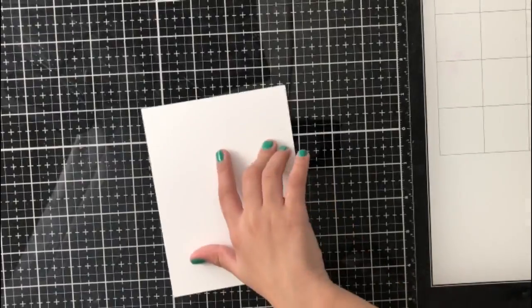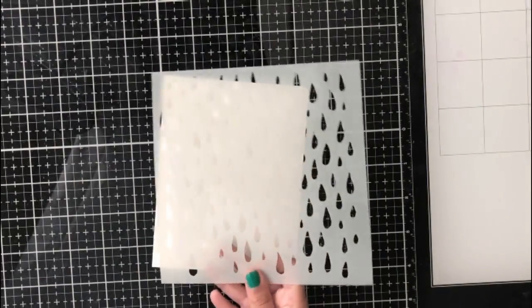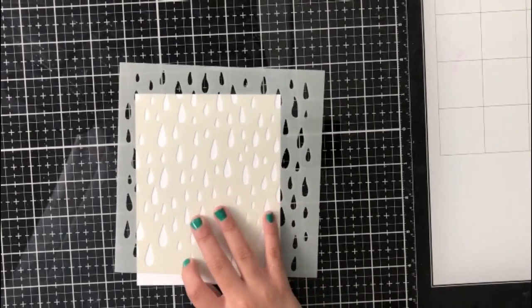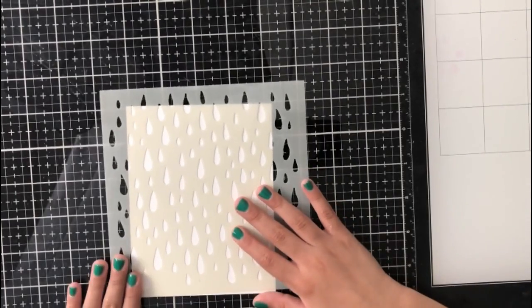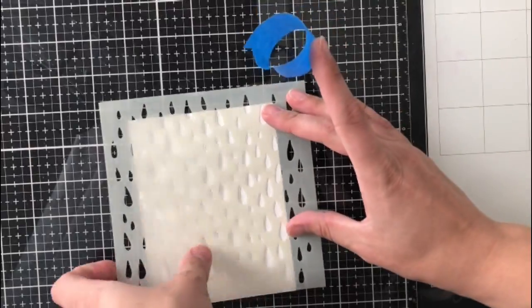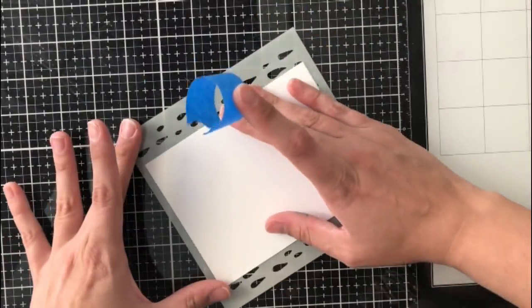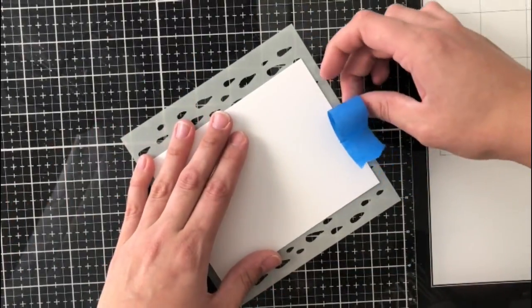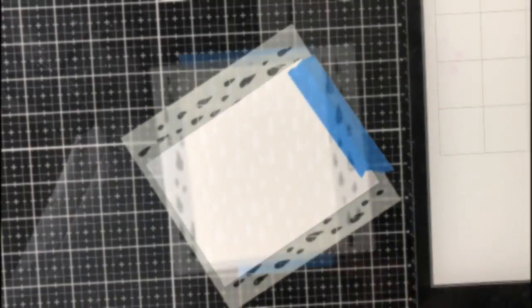Today we are going to use the stencil Looks like rain. My mom helped me tape the paper to the stencil. She taped it to the back so that it didn't move around.